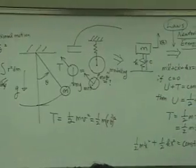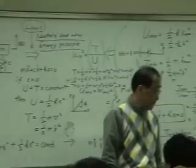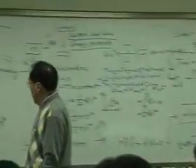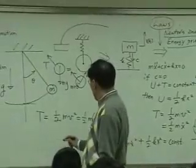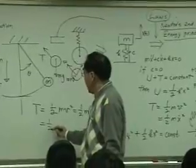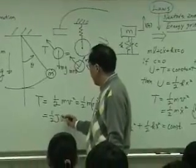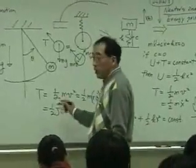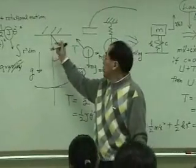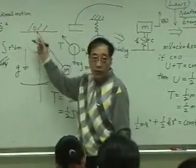Or you can think that this is one half J theta dot squared. And J is the moment of inertia of this mass with respect to position O over here.